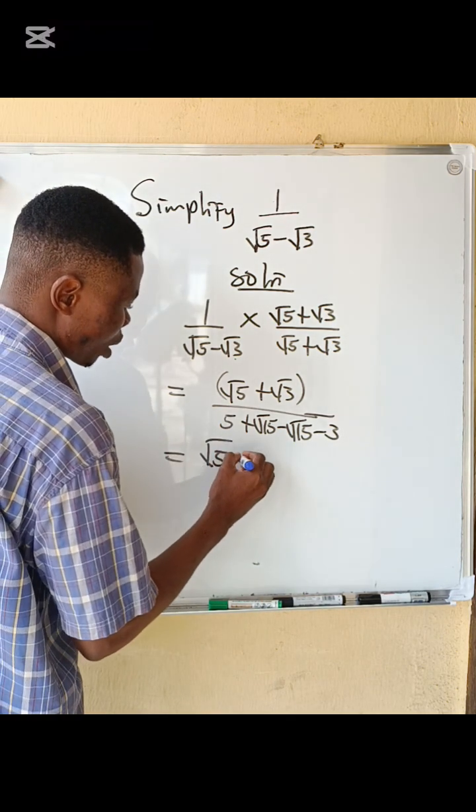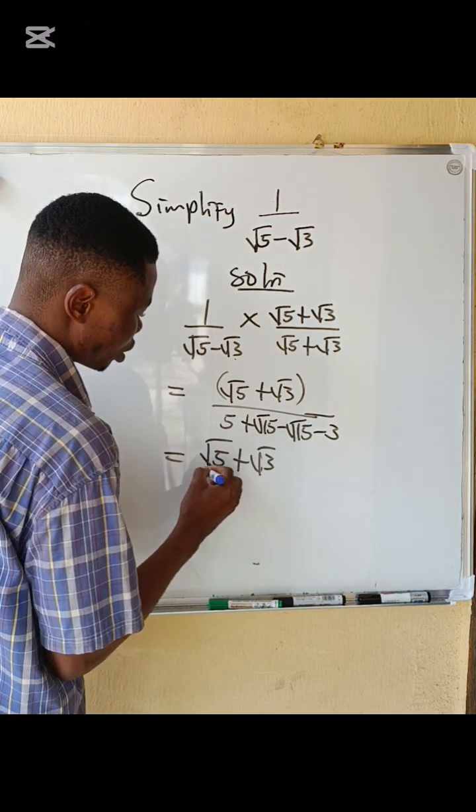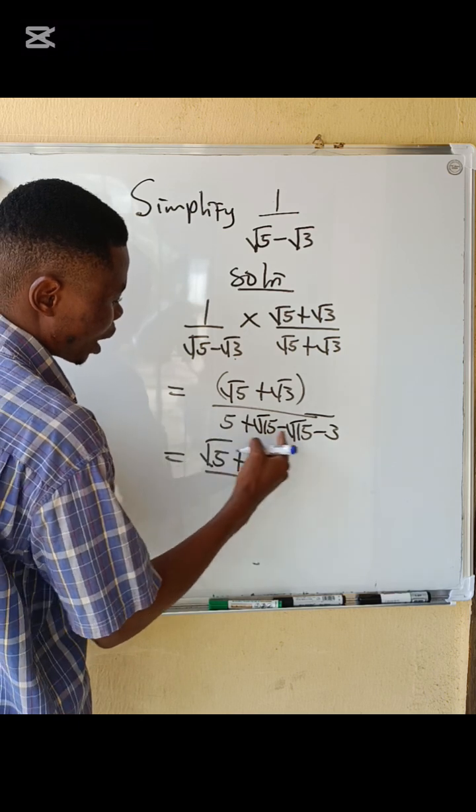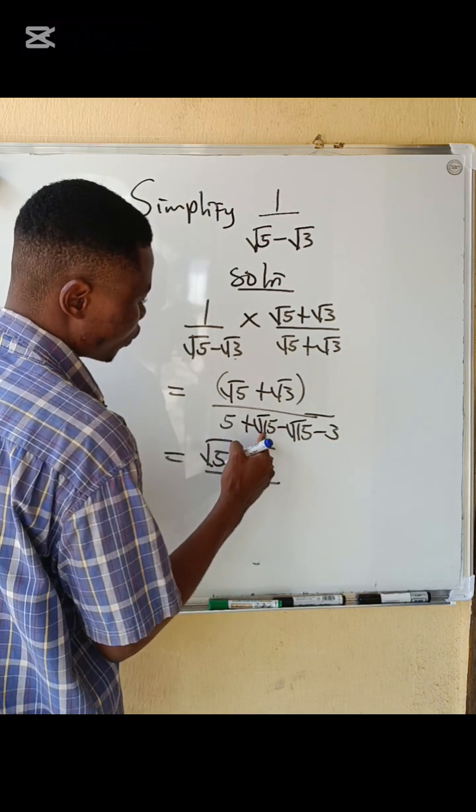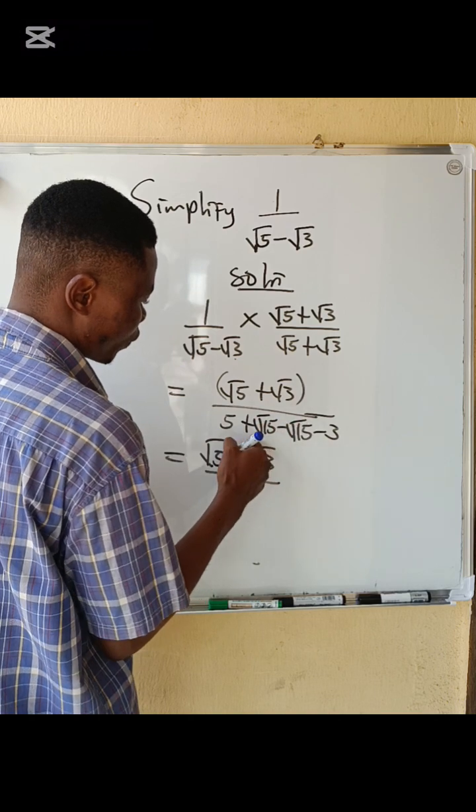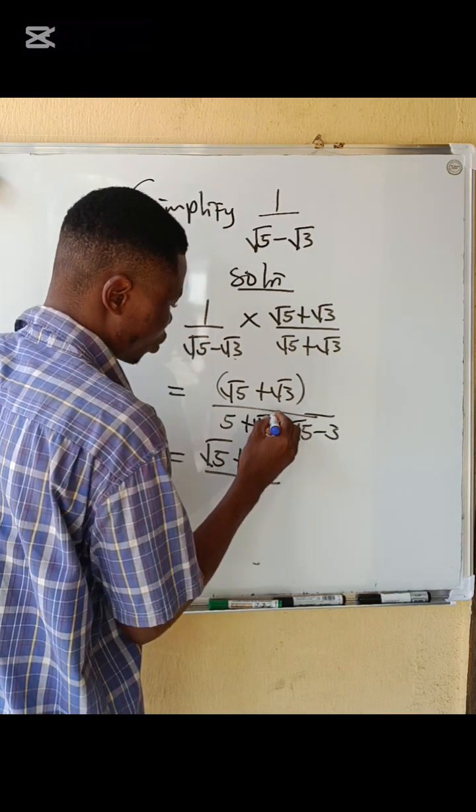Root 5 plus root 3 divided by 5 minus 3, which is 2. The root 15 terms cancel out.